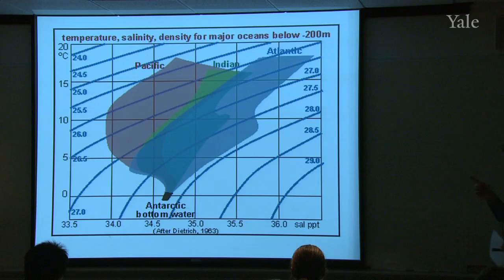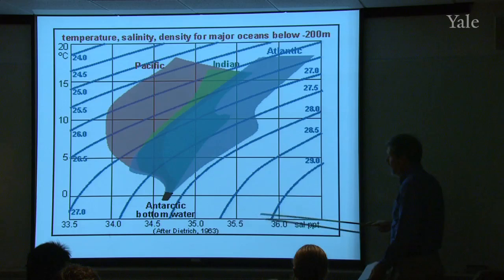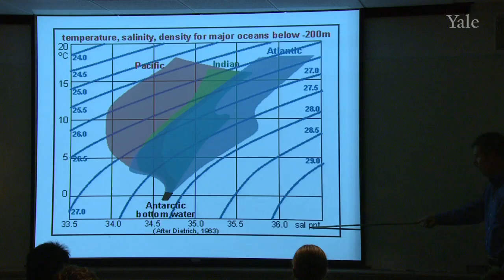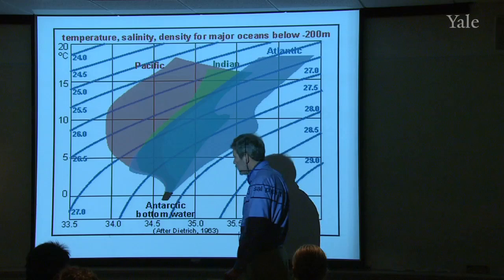Now, this diagram is nice because it combines together hundreds of CTD and Nansen bottle data sets from the three of the major world ocean basins, the Pacific Ocean, Indian Ocean, and the Atlantic Ocean. And what I like even better about this diagram is that it's superimposed, these balloons of data are superimposed on a diagram that has lines of constant density on it. Let me walk you through those lines first. So on this axis is the salinity in parts per thousand that we're used to working with, PPT. On this axis is temperature in degrees Celsius.